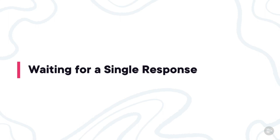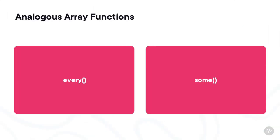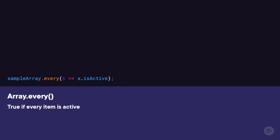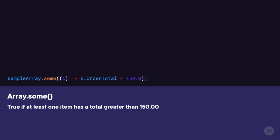In some situations you might queue up more than one promise but only care about the first one to get fulfilled. Before looking at that function, I want to take a quick detour to talk about two other built-in JavaScript functions: every and some. These functions exist on array objects in JavaScript. Both functions take a function that will be evaluated — with every, if that function is true for every item in the array then every returns true. With some, if that function is true for at least one item in the array, then some returns true.